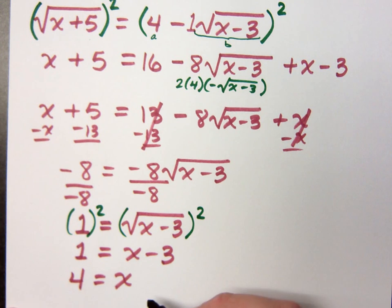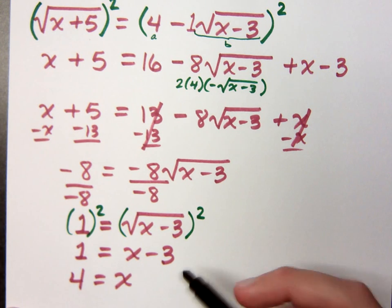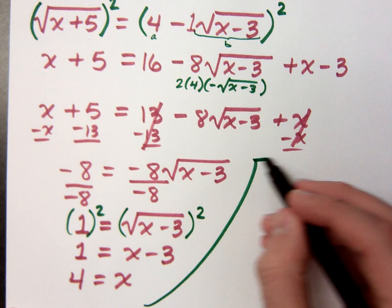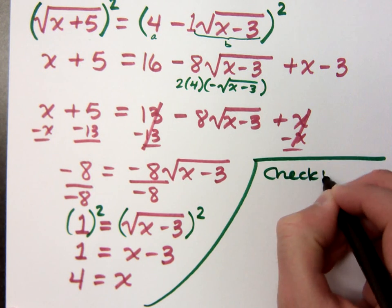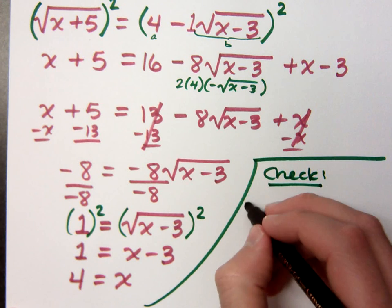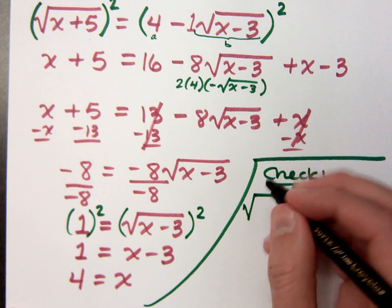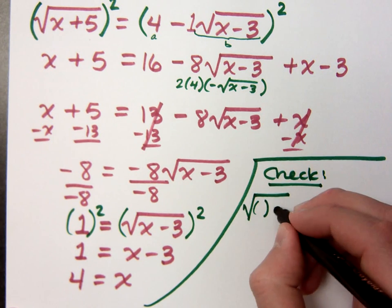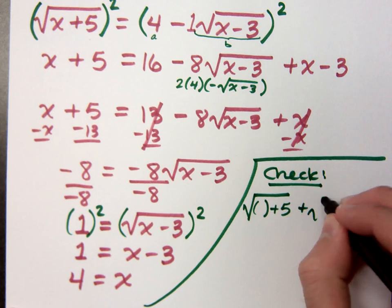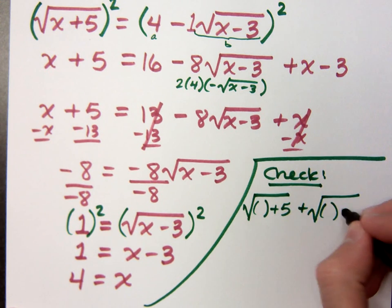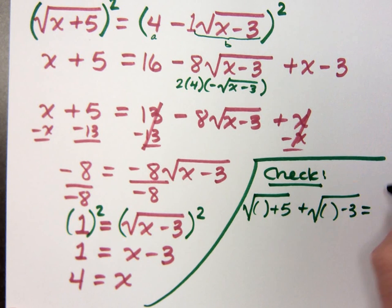Now before I box this though, we do have to check our work. So let's do that over here. I need to check when I plug this guy in. Is that number plus 5 in the square root, plus that number minus 3, does that equal 4?